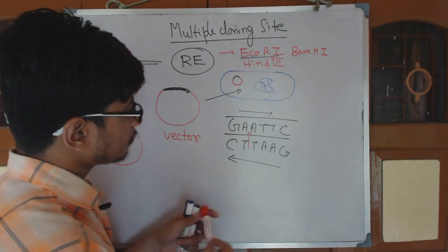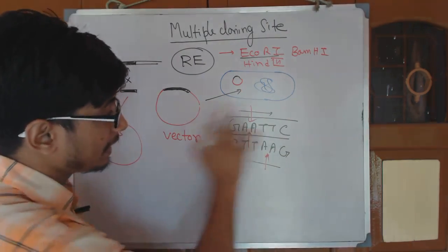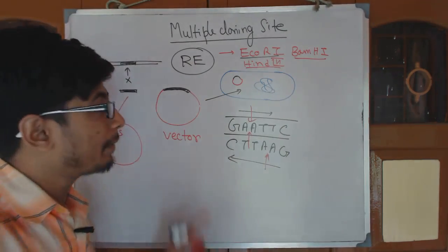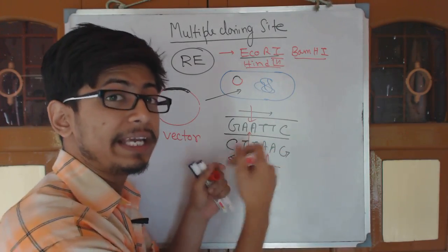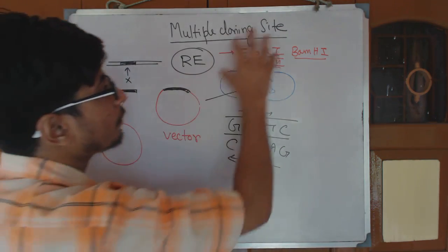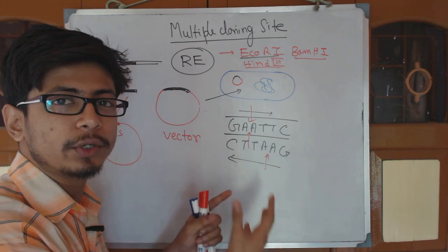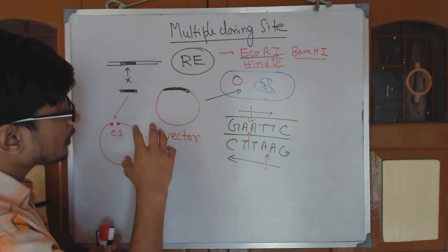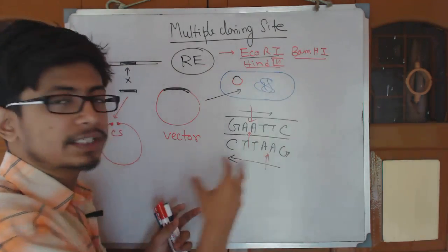They will cleave one from this A, another from this A. That is how they cleave. This is true for all of them. They are palindromic sequences but have different sequences to recognize and different places to cleave. This cloning site consists of many recognition sequences of restriction endonuclease enzymes.